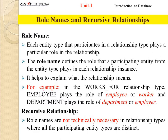For example, in the 'Works For' relationship type, the employee plays the role of employee or worker, and the department plays the role of employer. So the role clearly specifies that the employee is related to the department as a worker, and the department is related to the employee as an employer. This type of specification is defined by the term 'role name'.